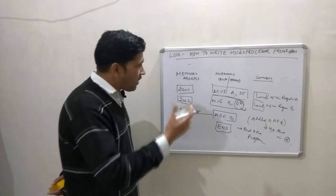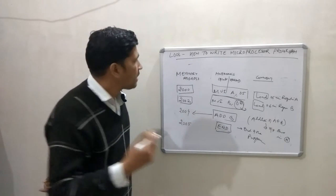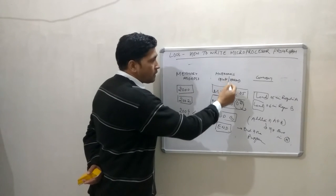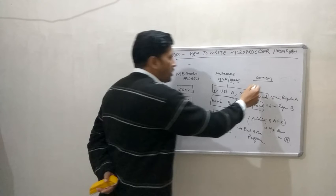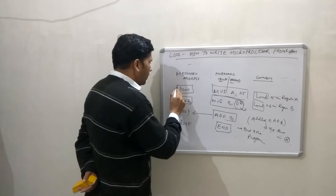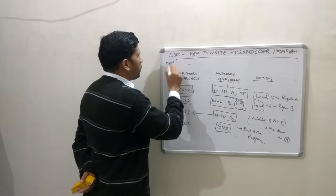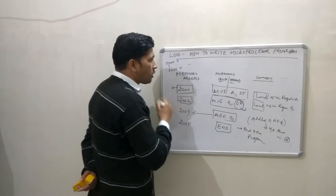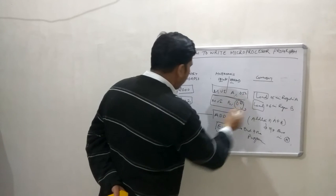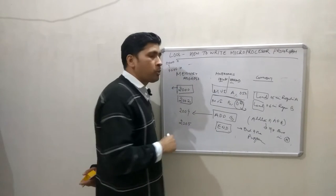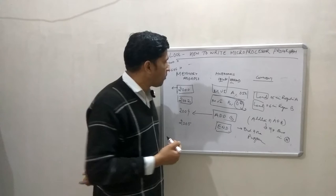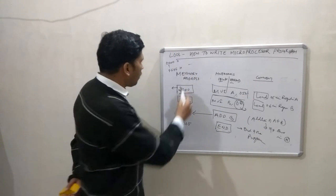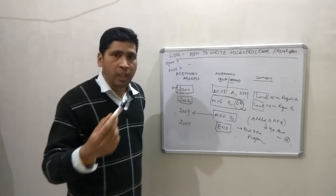So this is the standard format to write any microprocessor program. First is the memory address. Second is the mnemonics, divided into opcode and operand. Third is the comment. The memory address can range from 0000 to FFFFh — there is no need to mention H here because by default the microprocessor works on hexadecimal numbers. This is the memory address from which you are going to start the program.